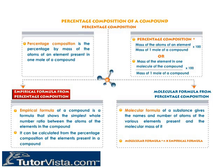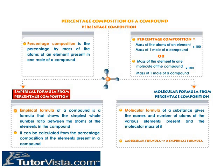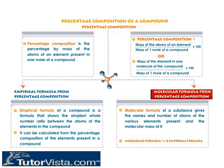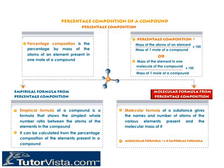Empirical formulae from percentage composition: The empirical formula shows the simplest whole number ratio between the atoms of elements in the compound and can be calculated from the percentage composition. Molecular formulae from percentage composition: The molecular formula gives the names and number of atoms of various elements present and the molecular mass. Molecular formula = n × empirical formula.